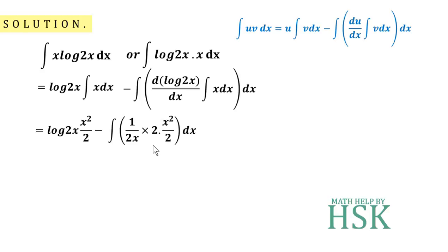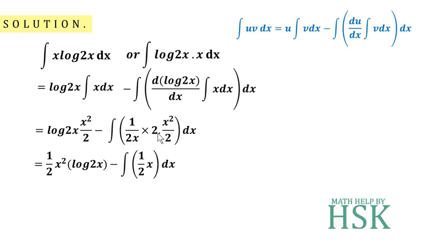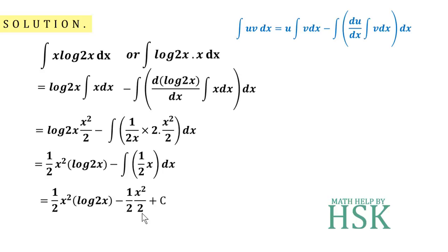On simplifying, I can write this as (1/2)x²·log(2x). This x and the x² cancel, and the 2 and 2 cancel, so I get (1/2)x dx. The integration of x further can be written as x²/2. So the final answer is (1/2)x²·log(2x) minus (1/4)x².